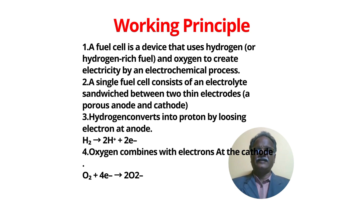Hydrogen converts into a proton by losing an electron at the anode. Oxygen combines with an electron and forms an anion.